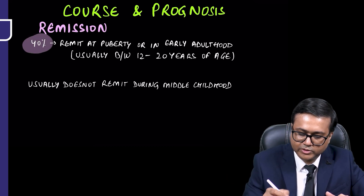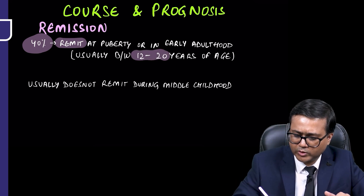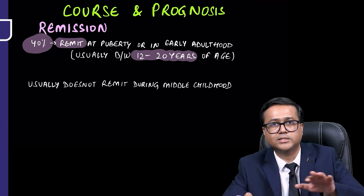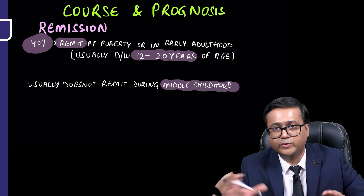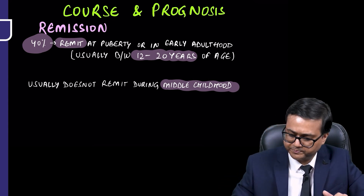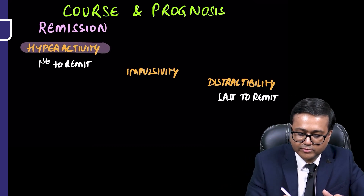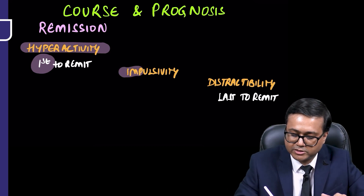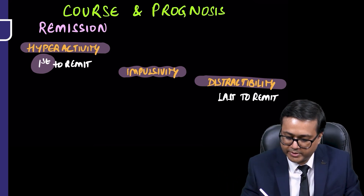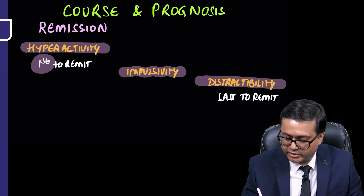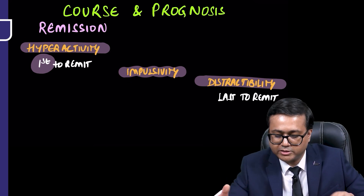Remission of symptoms occurs in about 40 percent of cases, typically between 12 to 20 years of age — not in middle childhood. The order of remission follows the mnemonic HID: Hyperactivity is the first symptom to remit, followed by Impulsivity, and lastly Distractibility or inattention, which is the last to remit.